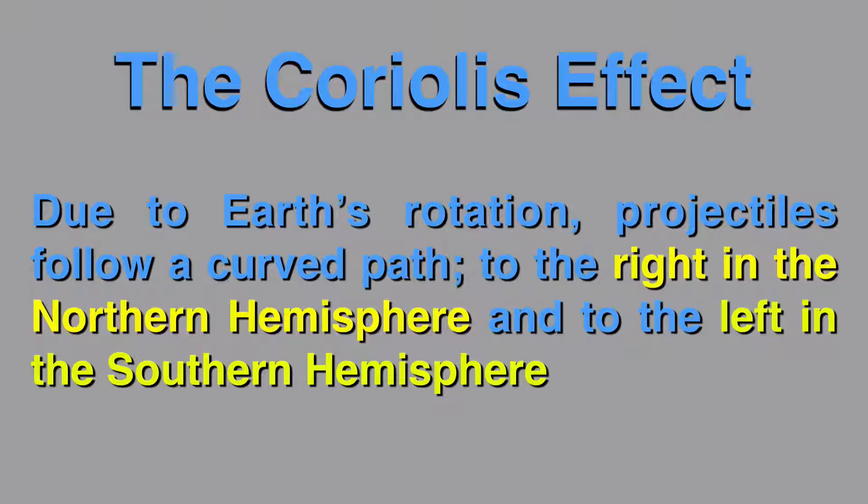Just to summarize the Coriolis effect, because the Earth is rotating, projectiles follow a curved path, which is to the right in the Northern Hemisphere and to the left in the Southern Hemisphere, which is proof the Earth is rotating.